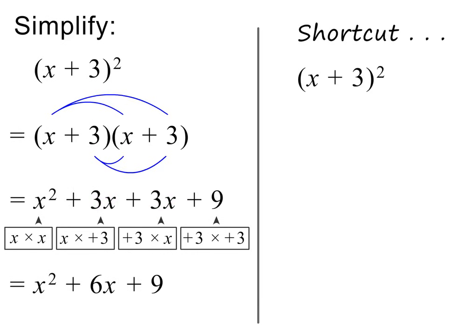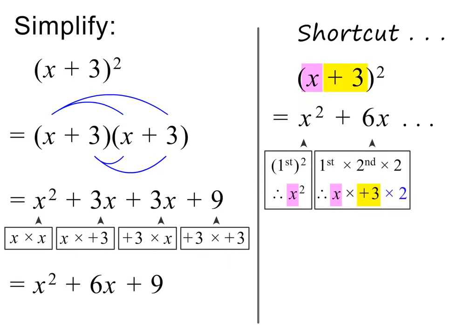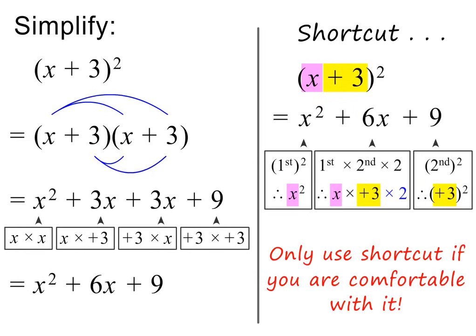Please note: when squaring a bracket, there is a shortcut you can use. We square the first term in the bracket, then multiply the first term by the second term and double the answer, and then we square the second term. This again gives the same answer we got earlier. If you are comfortable with this shortcut, please use it — otherwise you are welcome to use the long method.